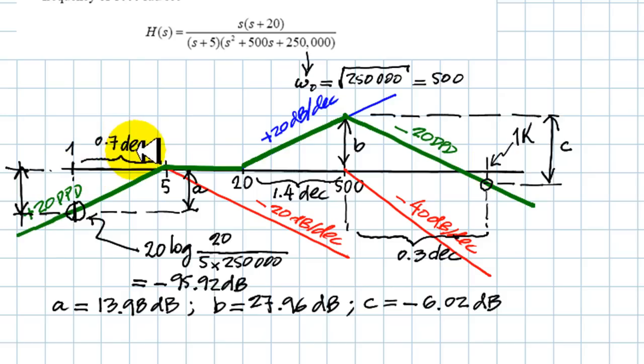Now we have computed them, 0.7 decades from 1 to 5, 1.4 decades from 20 to 500, and 0.3 decades from 500 to 1,000 radians per second. With the slopes and those decades and distances, we've computed A, B, and C, the climbs and drops, given down here, the three of them. With the values at 1, this one, we can compute all the others.